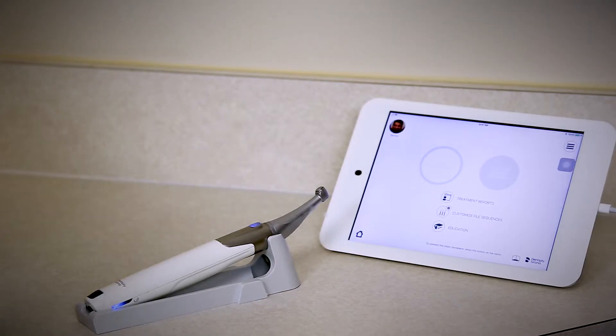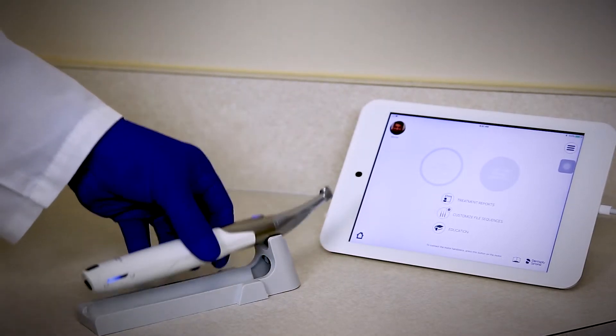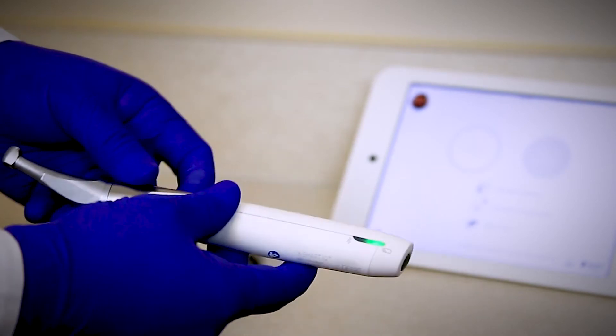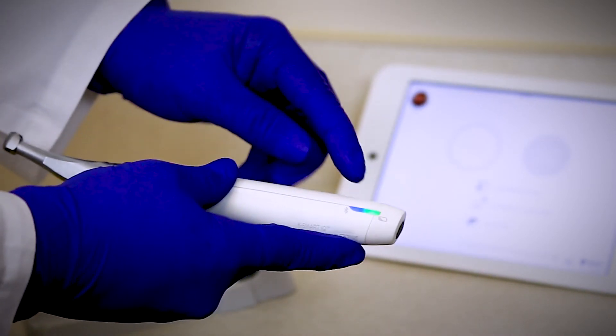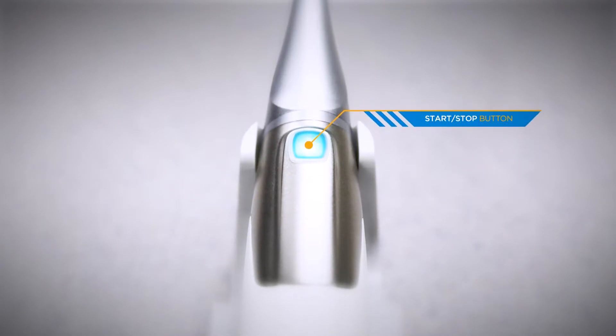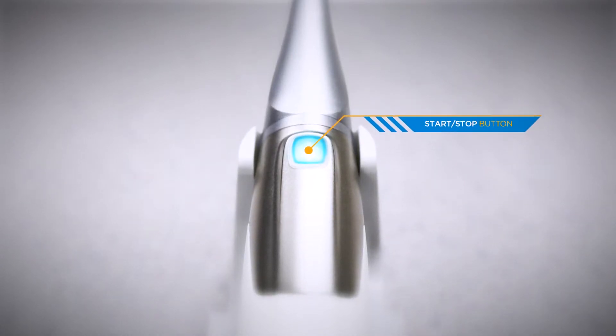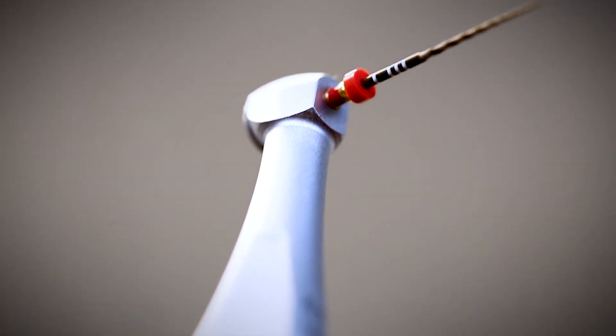To wake it from standby mode 1 you pick up the motor handpiece. To wake it from standby mode 2 you must press the multi-function button. In the center of the motor handpiece you will find the start stop button. This is used to start and stop the rotation of the motor.